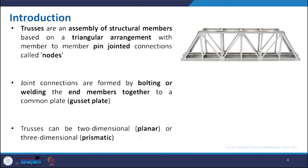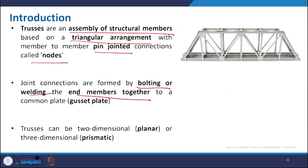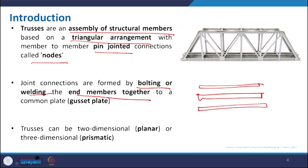Trusses are an assembly of structural members based on a triangular arrangement; the members are pin-jointed and where they join they form a node. The joint connections are formed by bolting or welding at the end of members together with a gusset plate. Basically, when we have multiple members — I-sections, wooden battens — and arrange them in a triangular form, it makes the structure more rigid and stable.